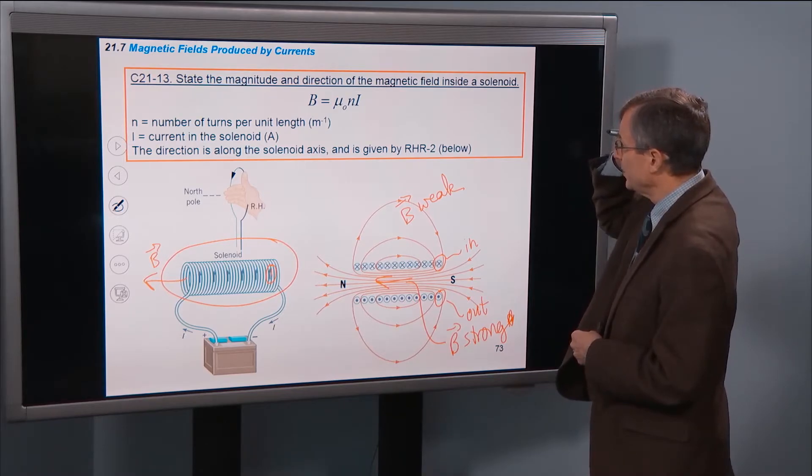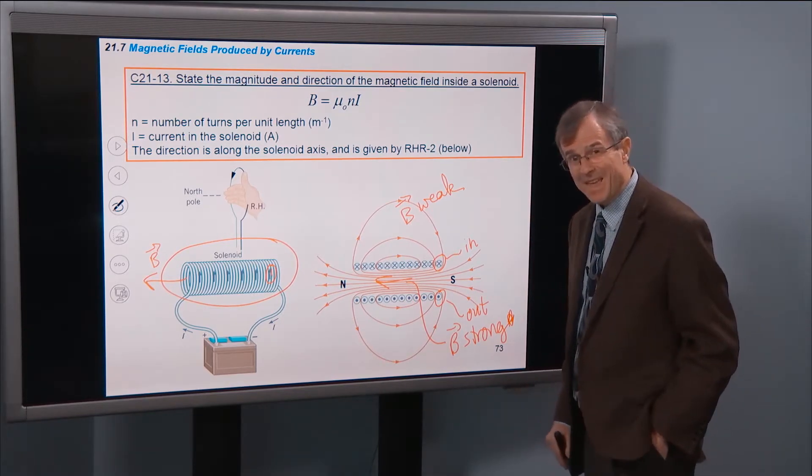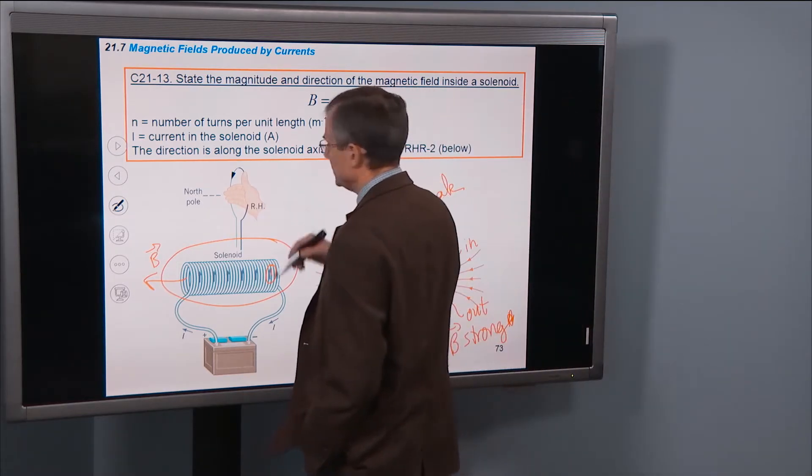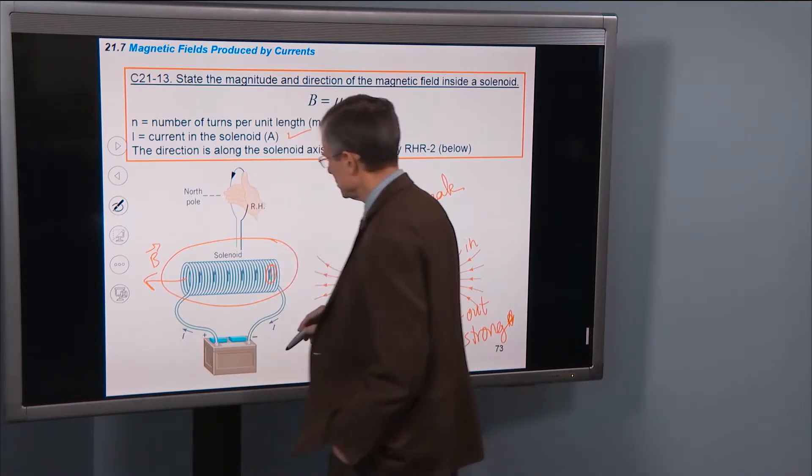So state the magnitude and direction. The magnitude is µ₀ times n, little n, times i. What's i? Let's talk about the things that we know about first. i is the current in the solenoid.